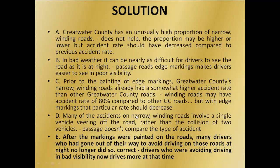Option D says many of the accidents on narrow winding roads involve a single vehicle veering off the road rather than the collision of two vehicles. The passage doesn't compare the type of accident, so option D is also ruled out.